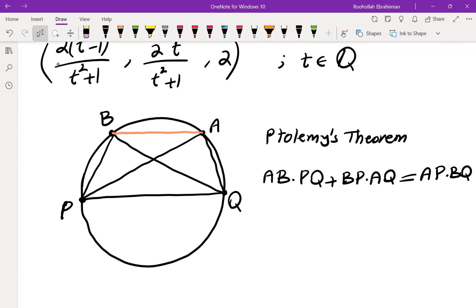Now we know that AB and PQ, we know that PQ is rational, we know BP is rational, we know AQ is rational, we know AP and BQ are all rational. Therefore this would have to also be rational.